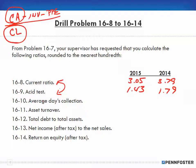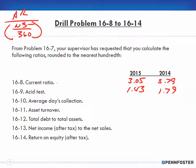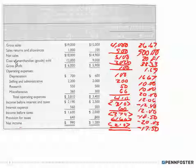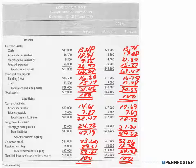Alright, let's move on to average days collection. The formula is accounts receivable divided by net sales over 360. Where do I find net sales? On the income statement. For 2015 net sales is right here — 18,000. And accounts receivable is on the balance sheet — 16,500.